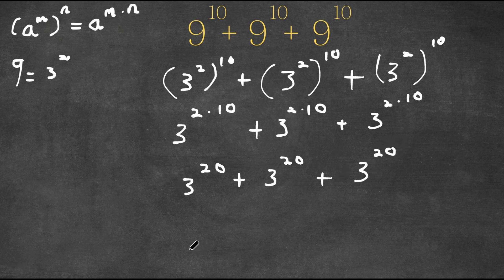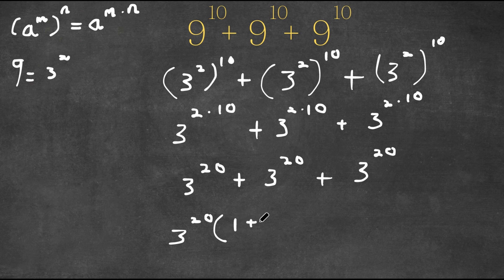And now if we factor out 3 to the power of 20 from this, we get 3 to the power of 20 times — each remaining term divided by 3 to the power of 20 is 1, and the same goes for the other two. So now we have 3 to the power of 20 times 1 plus 1 plus 1, and 1 plus 1 plus 1 is 3. So now we have 3 to the power of 20 times 3.